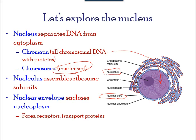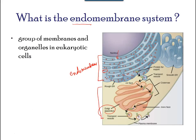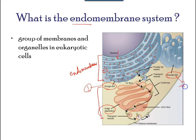The endoplasmic reticulum, or ER, is a series of interconnected membranous tubules that collectively modify proteins and synthesize lipids. These two functions are performed in separate areas: the rough endoplasmic reticulum and the smooth endoplasmic reticulum, respectively.